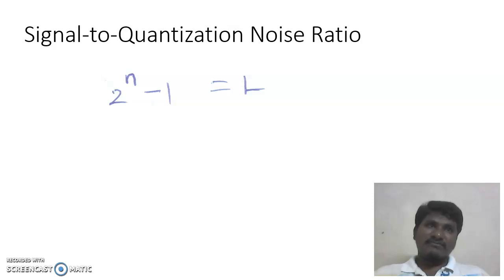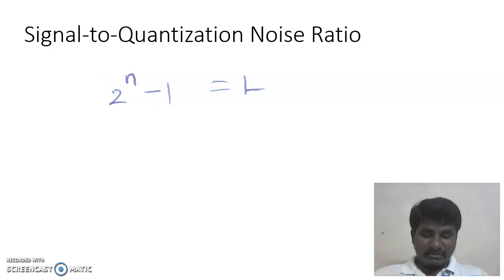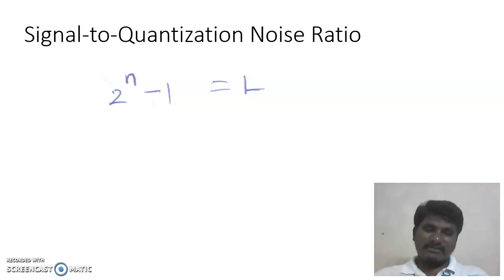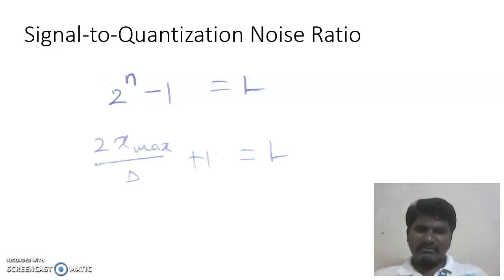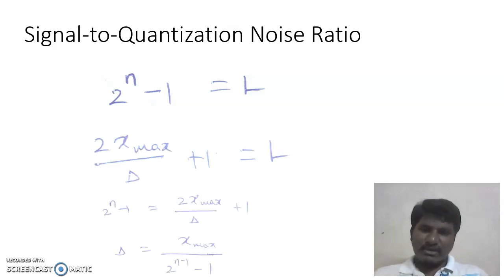We use a symmetric quantizer with an odd number of quantization levels. After quantizing, each quantization level is assigned a binary codeword of n bits. With n bits, there are 2^n possible combinations, giving L = 2^n − 1 quantization levels for a symmetric quantizer. Equating this with the earlier expression for L in terms of x_max and delta, we can solve for delta in terms of x_max and n.